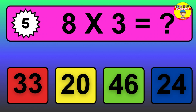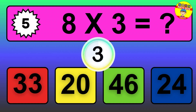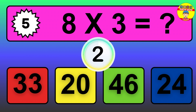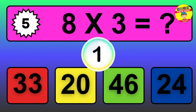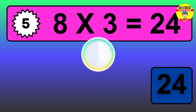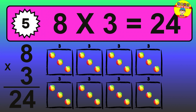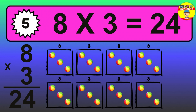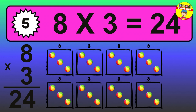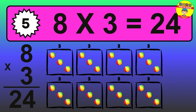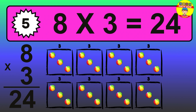Question 5. 8 times 3 equals what? The answer is 8 times 3 is 24. To calculate, we have 8 groups with 3 balls each one. So, how many balls do we have? 24 balls.